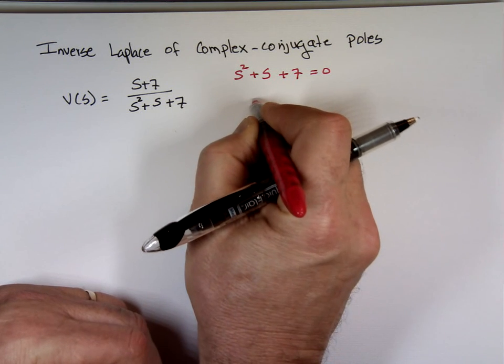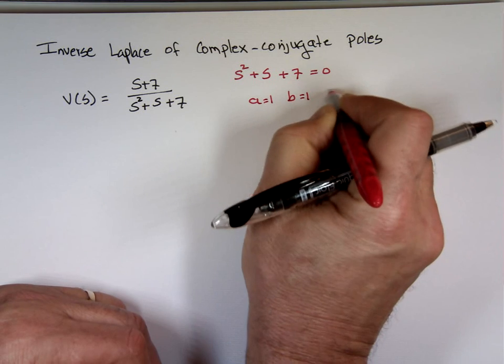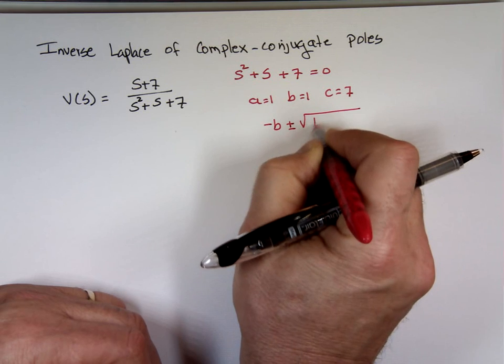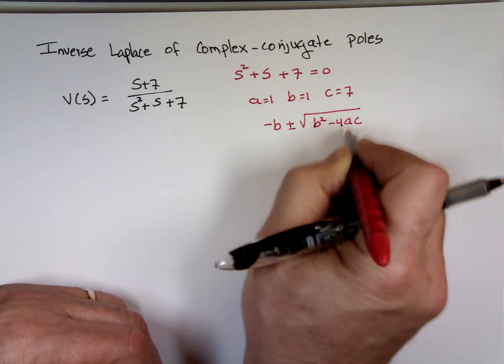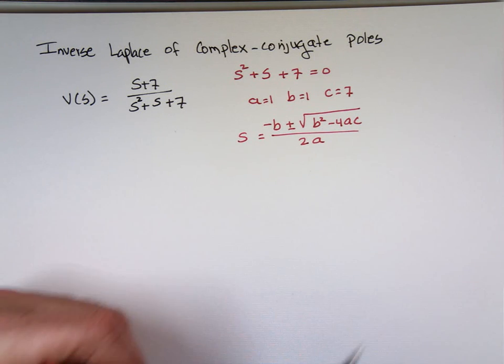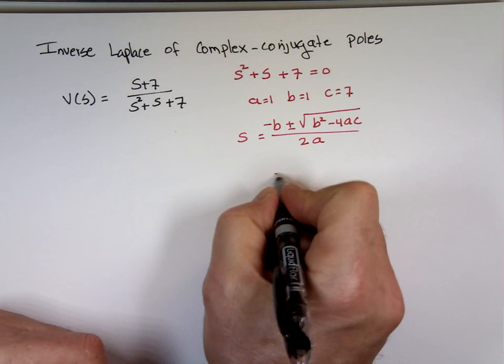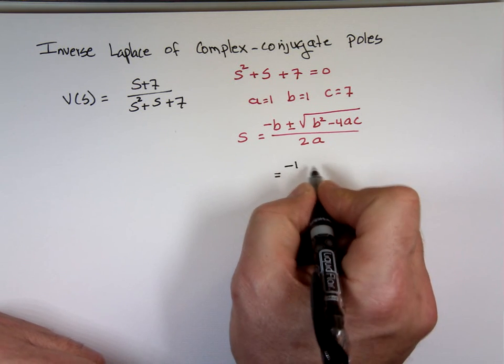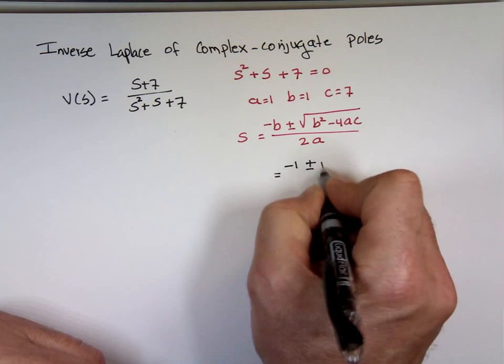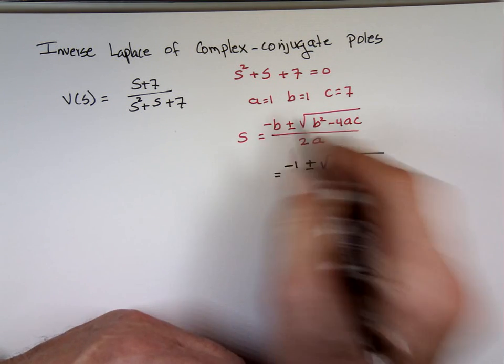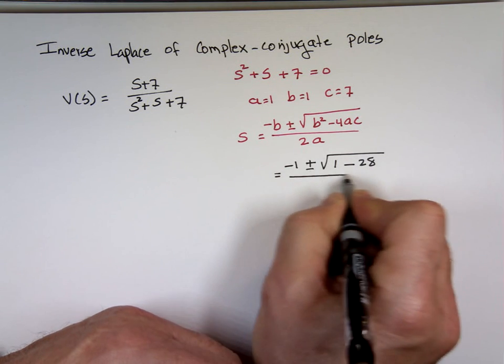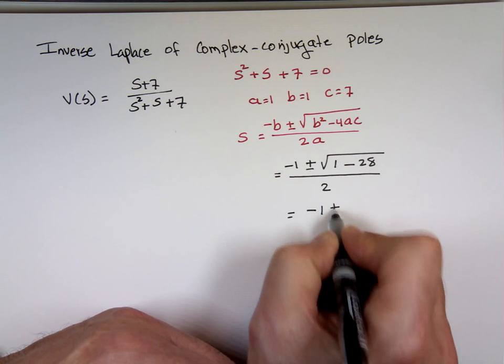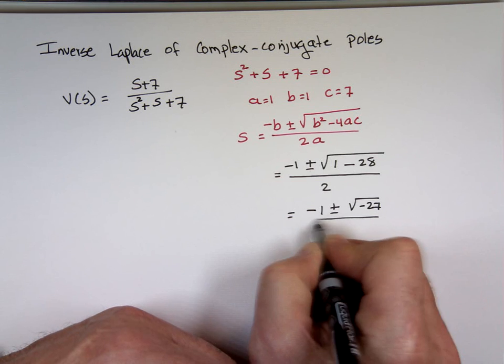So, you use the quadratic formula. A equals 1, B equals 1, C equals 7. S equals minus B plus or minus the square root of B squared minus 4AC divided by 2A, right? That's minus 1 plus or minus the square root of 1 minus 28 divided by 2.